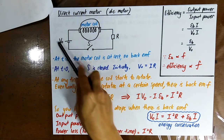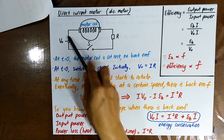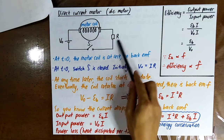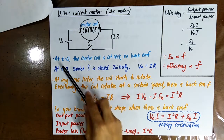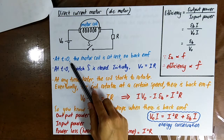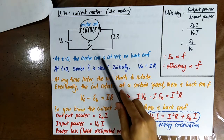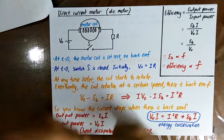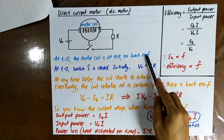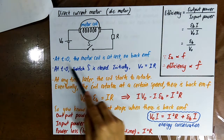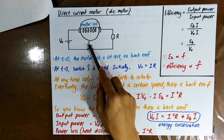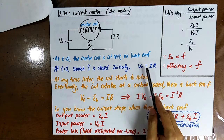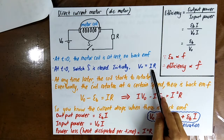The EMF of the battery is denoted as V₀, and there is resistance R and switch S. At time equal to zero, the motor coil is at rest — it has not rotated yet — so there is no back EMF. When you just close the switch S, V₀ = IR.